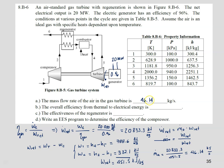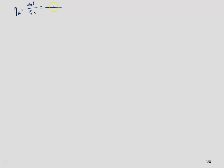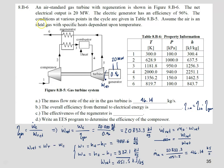Now we need to find the overall efficiency. To find it, we need to multiply all the efficiencies involved, including the thermal efficiency. The thermal efficiency is defined as the net work divided by q_in — it doesn't matter whether we use power or specific quantities because the mass flow rate cancels. We already know the net work is 451.5 kilojoules per kilogram, but we need to find q_in.